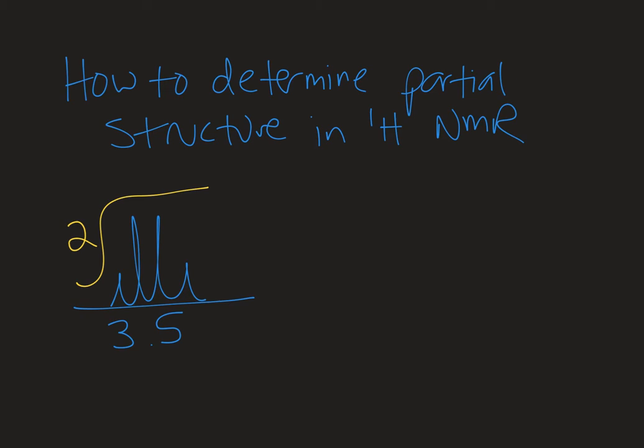So I like to start with the integration. I have an integration of two there. That tells me that there's two of that type of proton. Since the integration is less than three, it's probably a CH2. It doesn't have to be, it could be symmetry, but it's most likely a CH2. So I'm going to start from the integration with a CH2.